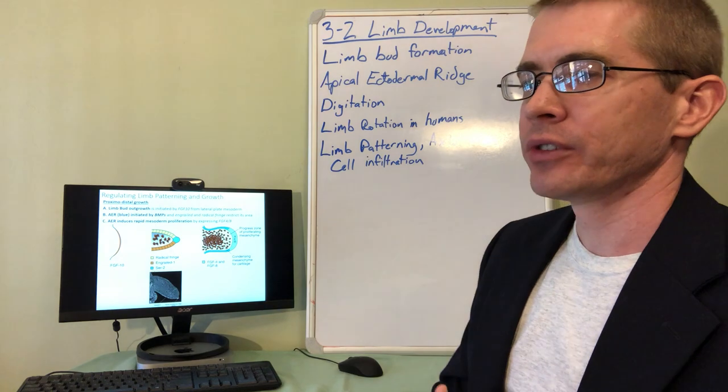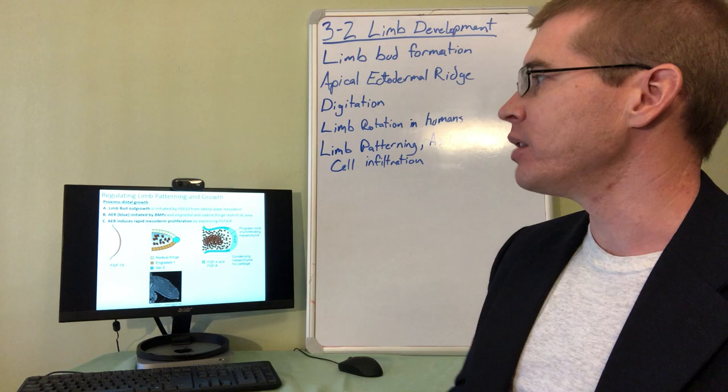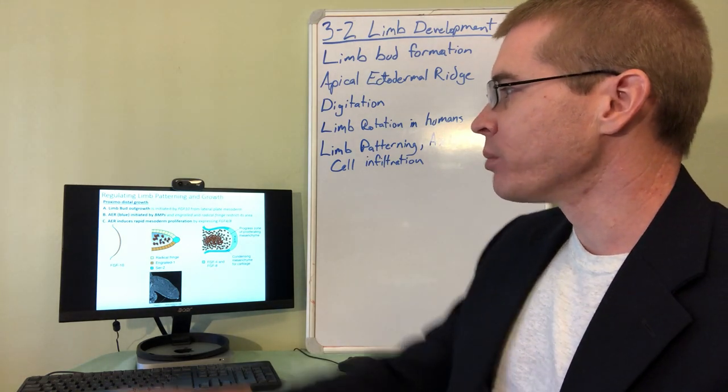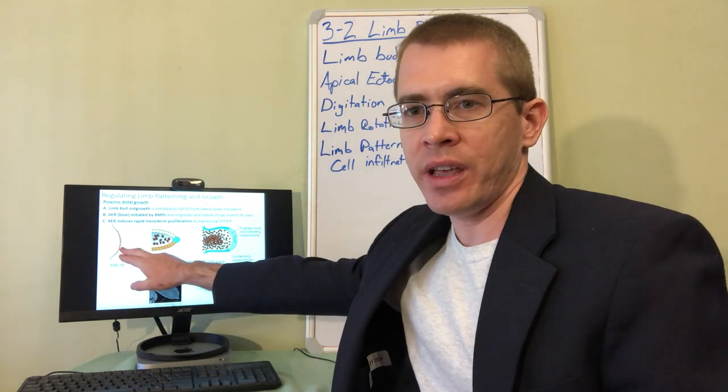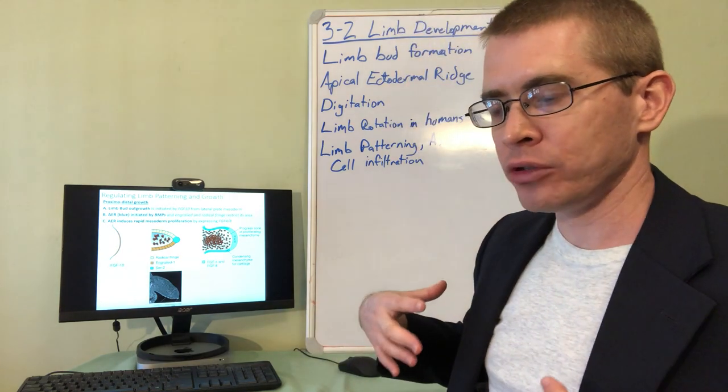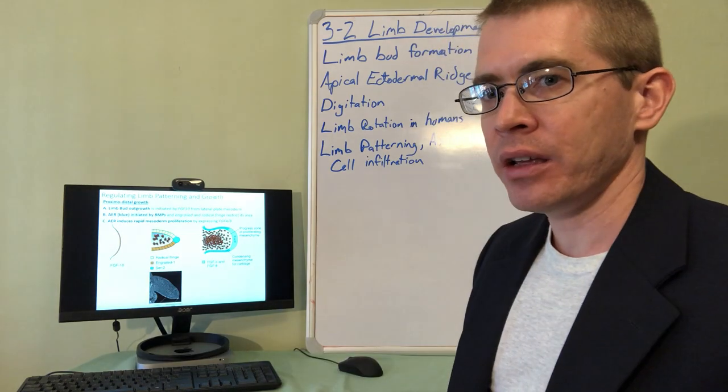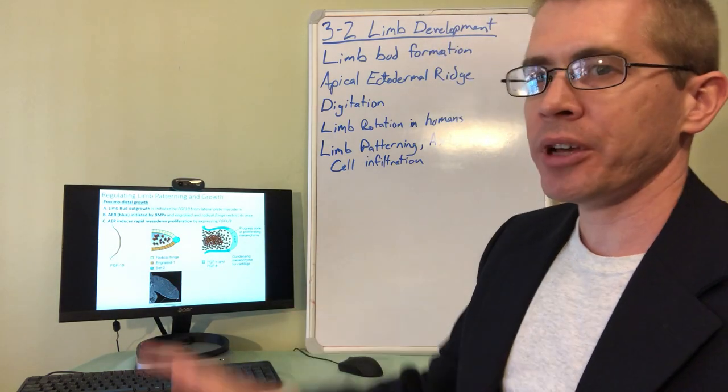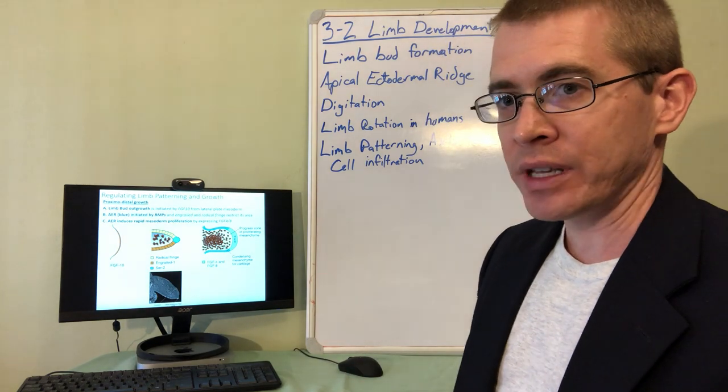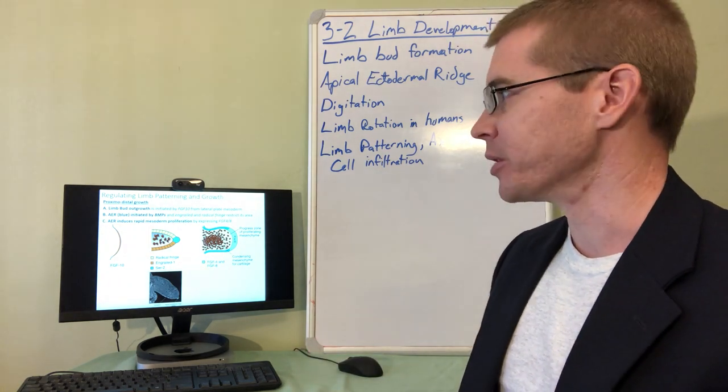There is a number of different morphogen signals that are important to understand in this limb outgrowth process. So that limb bud formation, the first stage where the limb bud starts growing out from the lateral plate mesoderm, that's initiated by FGF10 morphogen. So without FGF10, limbs do not even begin to form. But more than FGF10 is needed to end up creating this entire limb in its appropriate way.